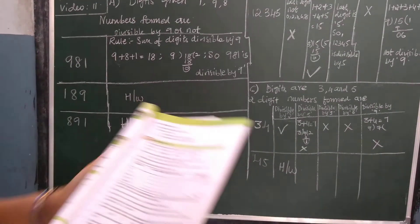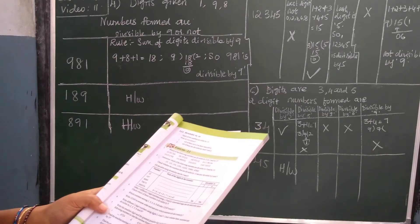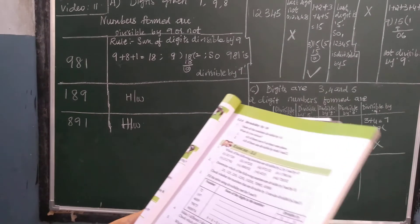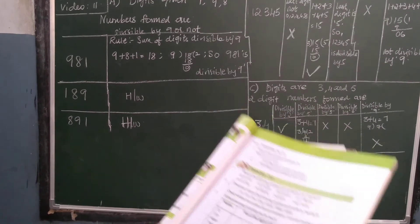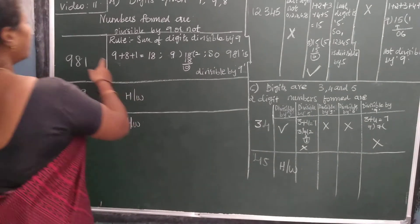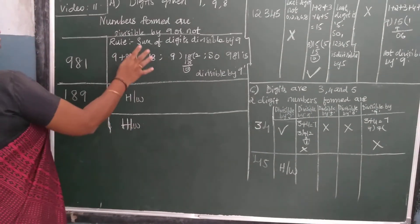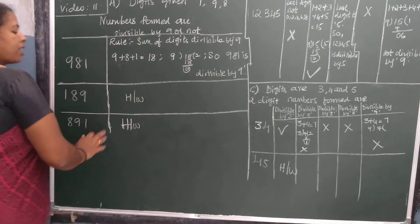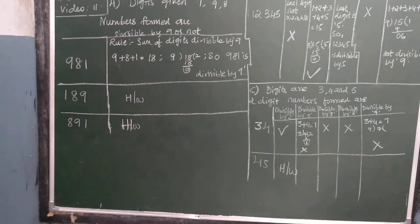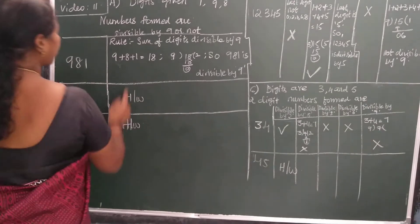Fourth question — see children. Digits given are 1, 9 and 8. We found 3 different numbers using these digits: 9, 81 and 1, 89 and 8, 91. I got 3 different numbers.